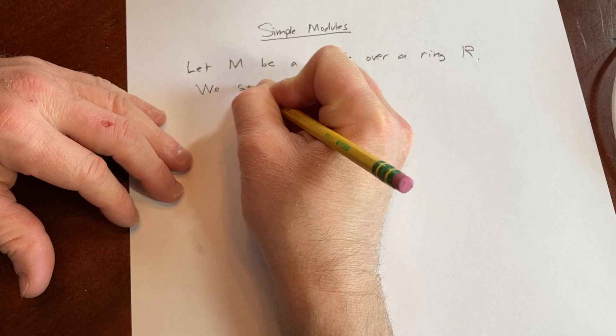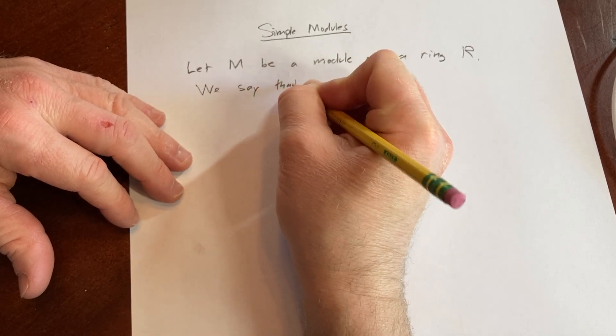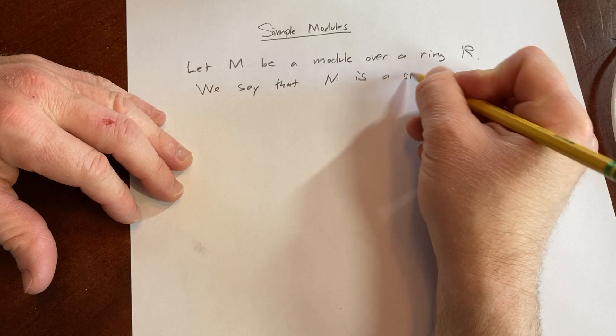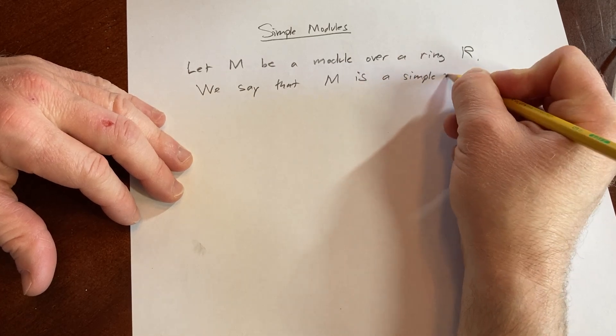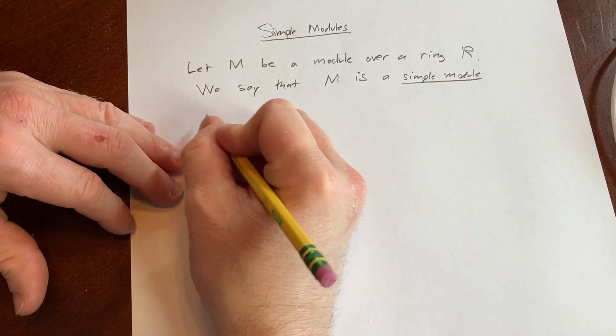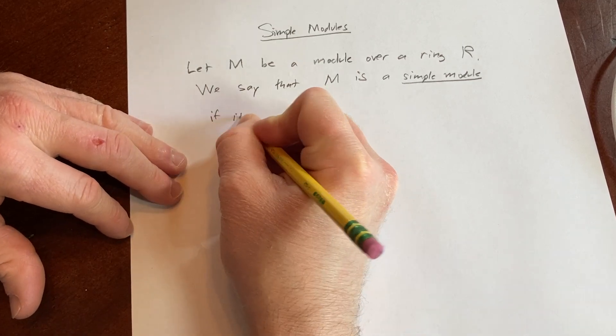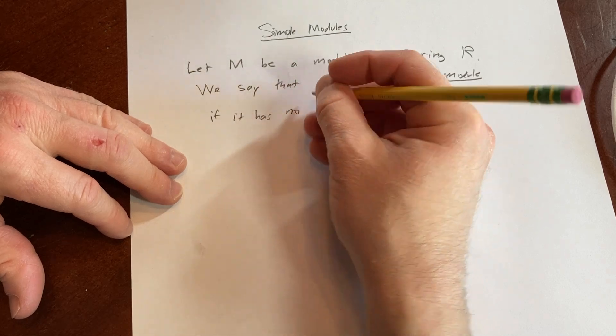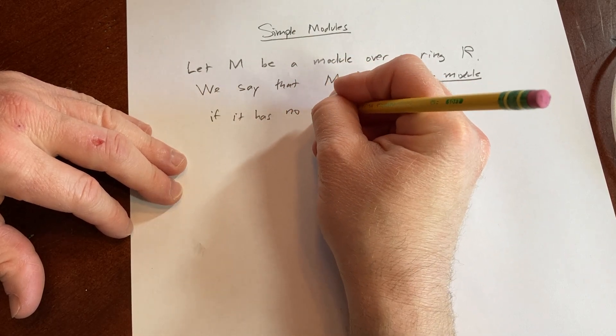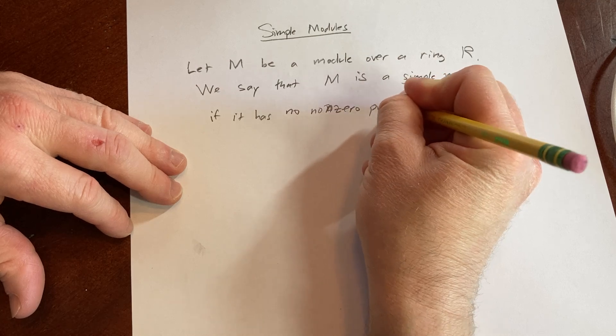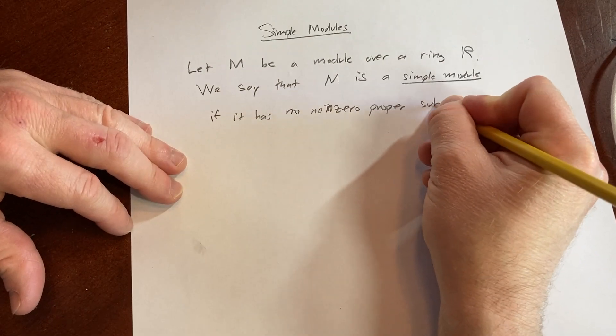We say that M is a simple module if it has no non-zero proper sub-modules.